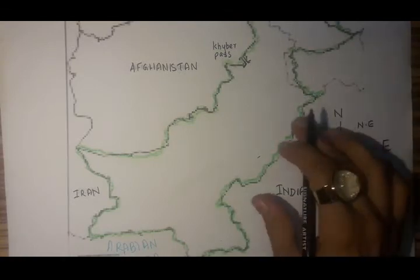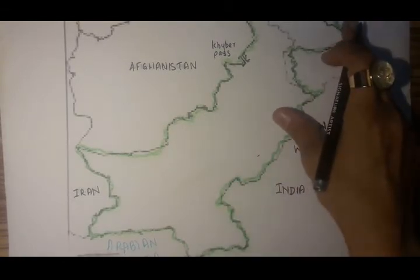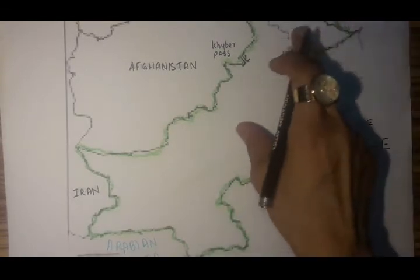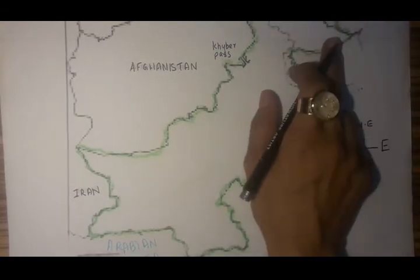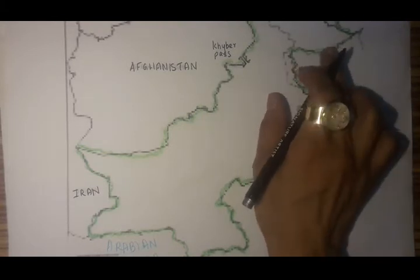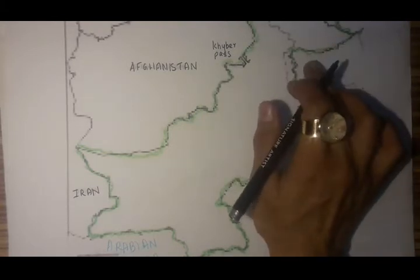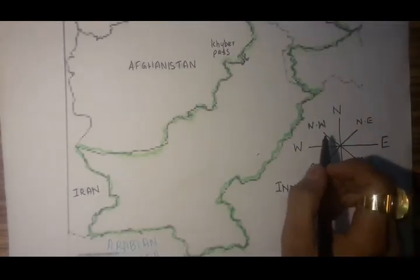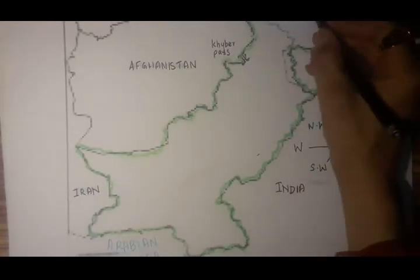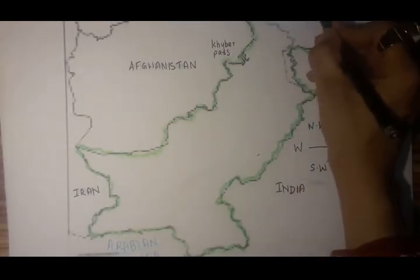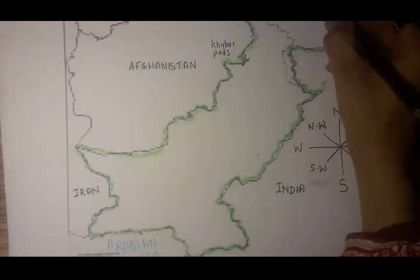Now, how are we linked with China? We are connected to China via the Karakoram Highway and another pass. On the border of Pakistan and China, this is that pass.